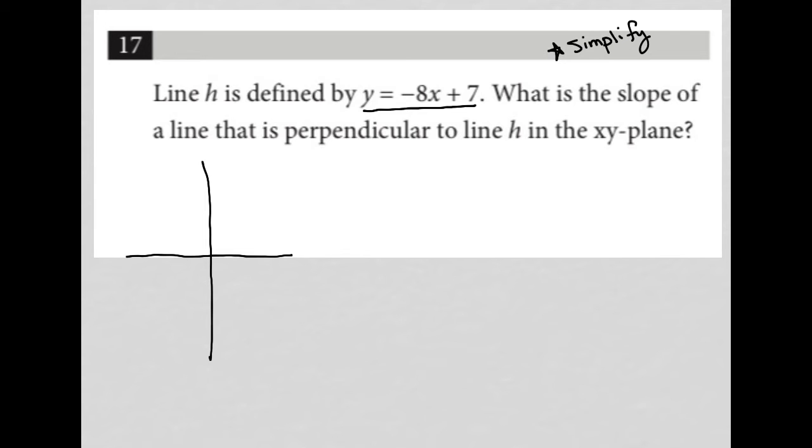First of all, what is the slope of line H? This comes from Y equals MX plus B, where B is 7 and M is negative 8. M represents the slope, so it's negative 8. Our slope is equal to negative 8.